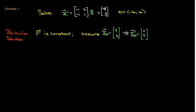Now for the particular solution the f vector is constant. It just has the negative 8 and 3. So we're going to assume that our particular solution is constant as well with components a and b. If it's constant then the derivative, so x sub p prime, is going to be the zero vector.